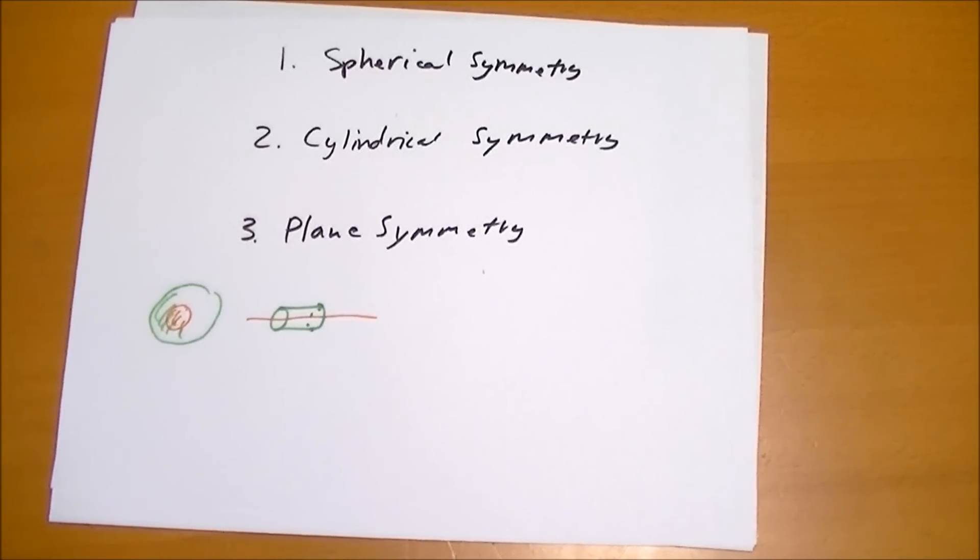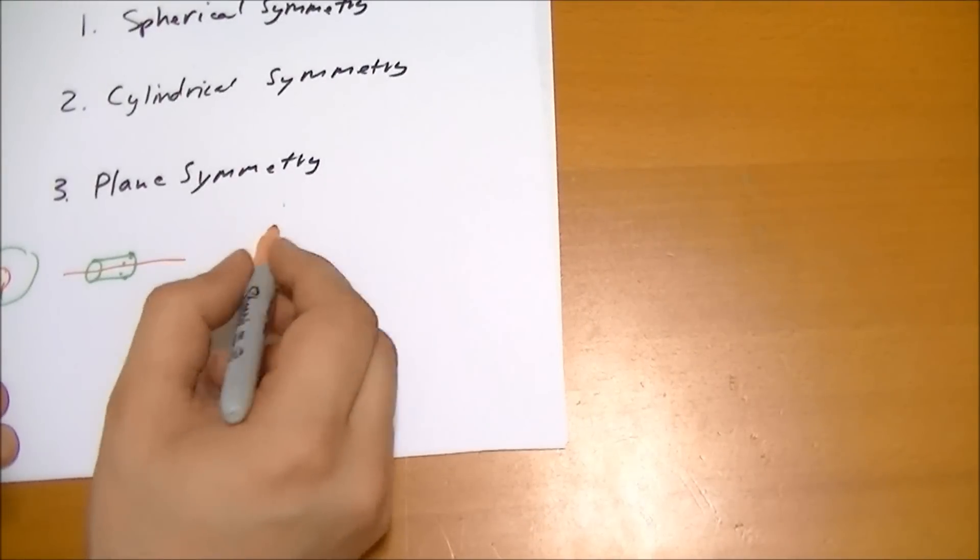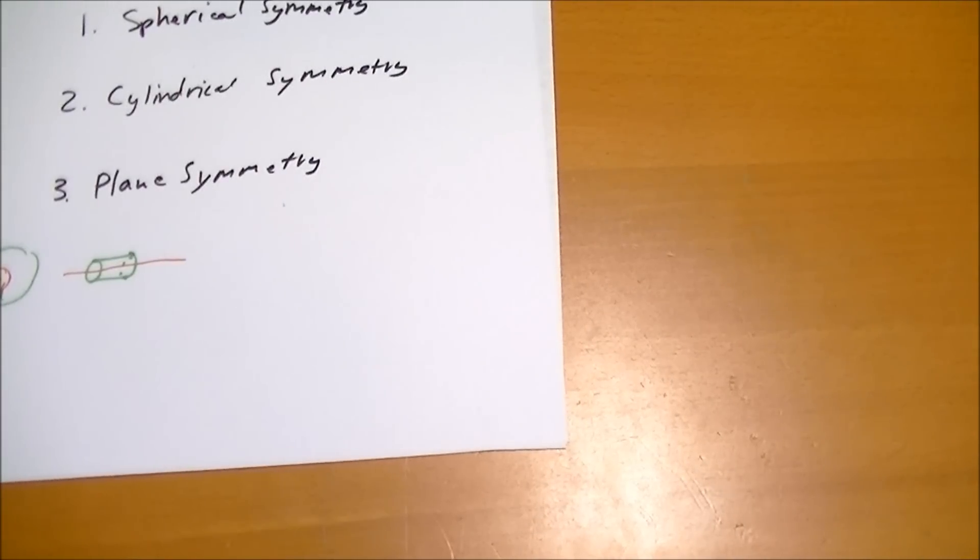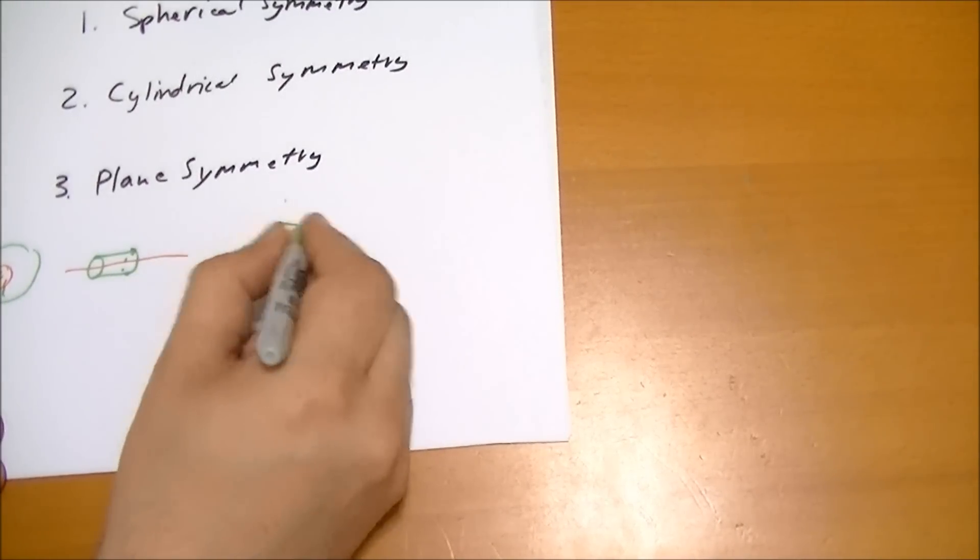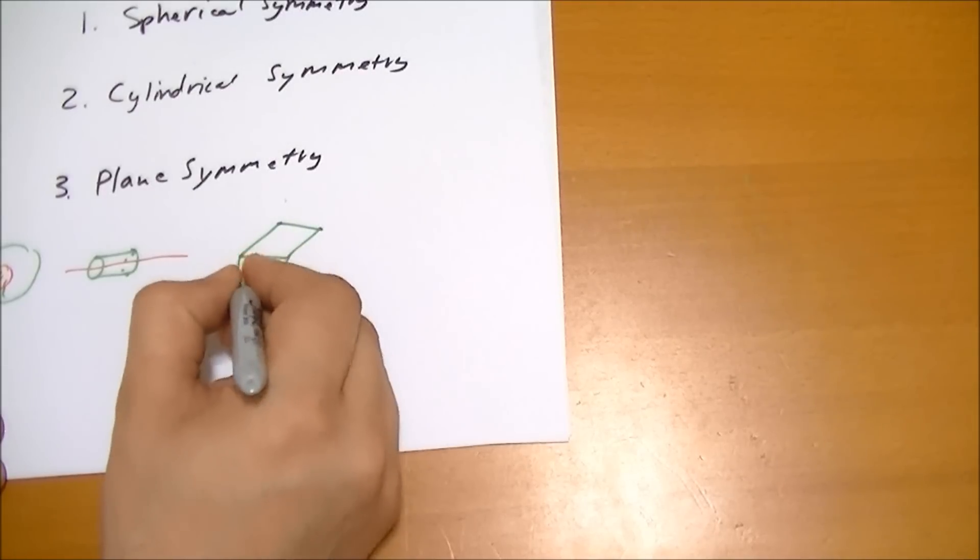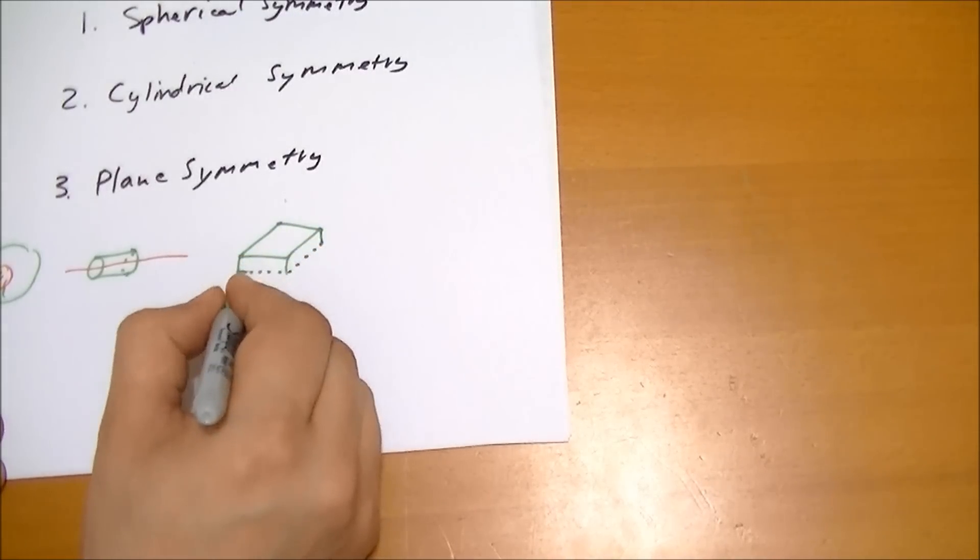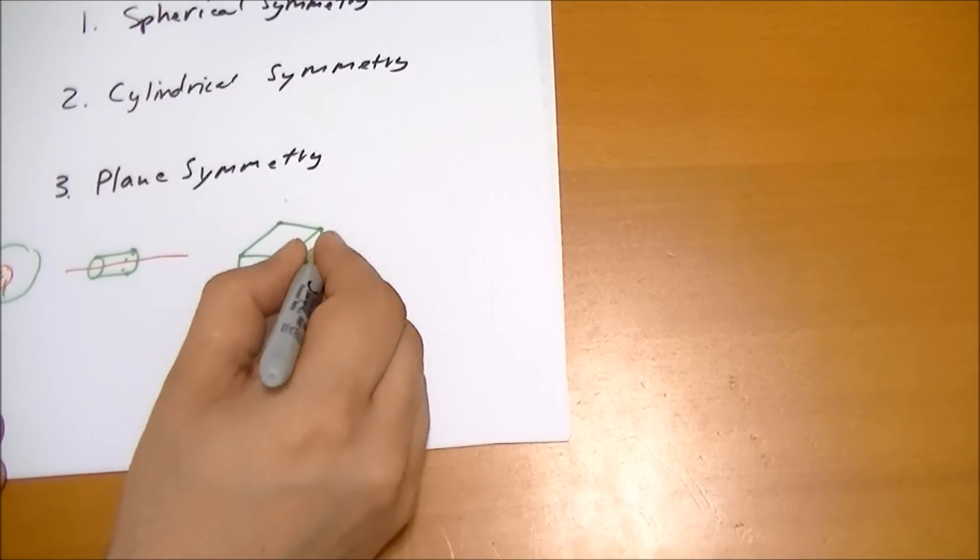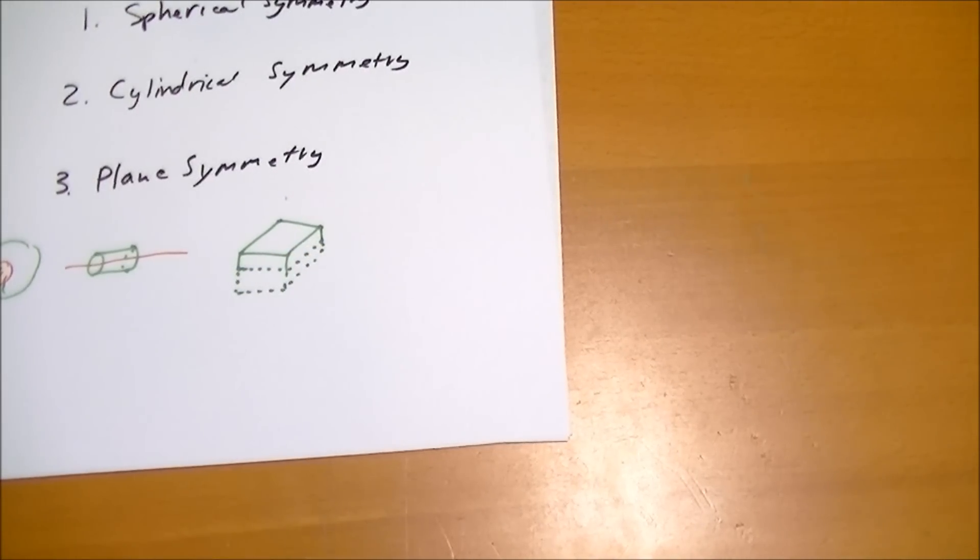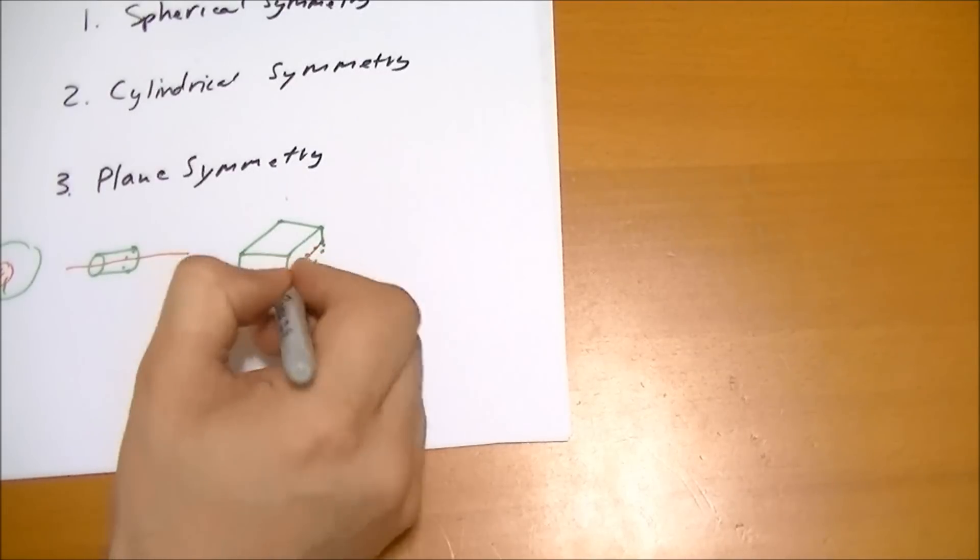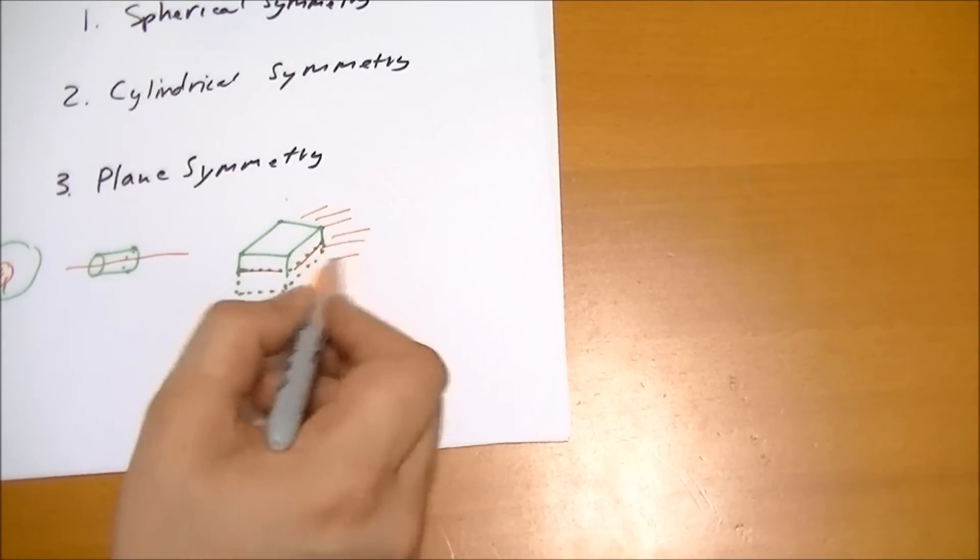And for planar symmetry, when we have a plane, what we do is we draw a Gaussian pillbox. Let me draw what that would look like. So here's the box, and it goes through the plane and out the other end. So we have the plane intersecting this thing, and the plane is basically everywhere.